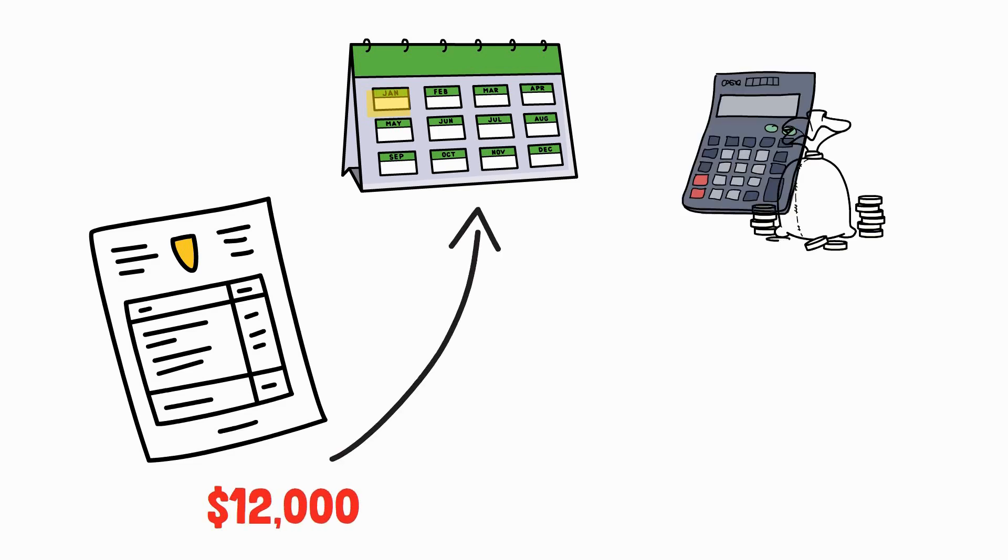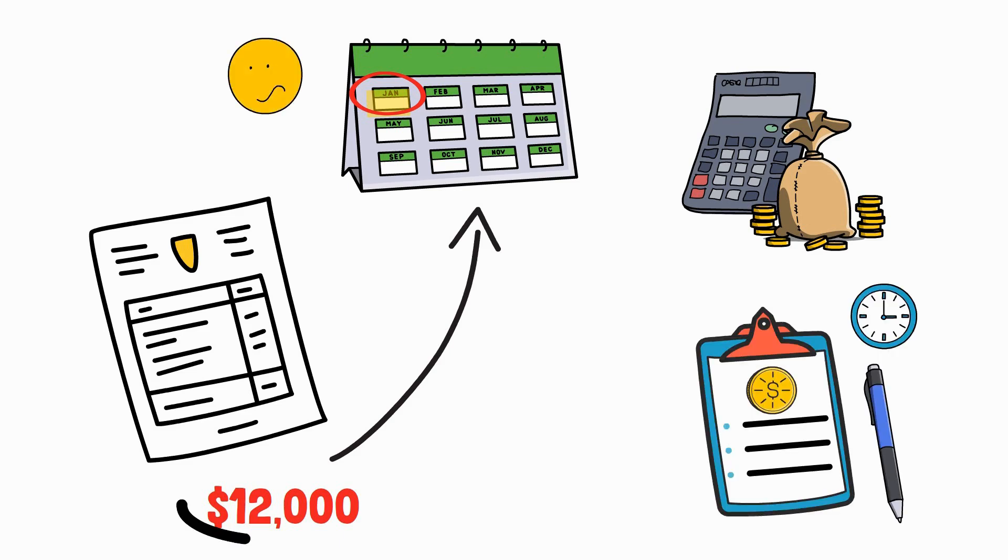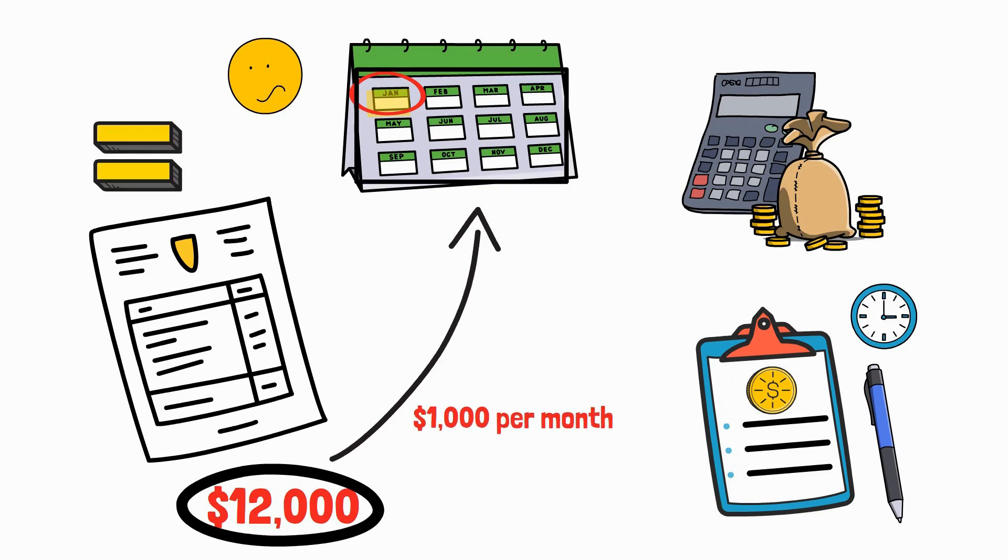Under cash accounting, your January looks awful. But accrual spreads that $12,000 evenly across 12 months, $1,000 per month, matching the expense to when the insurance is actually used.